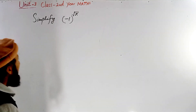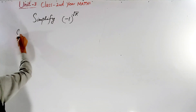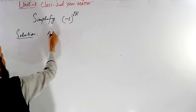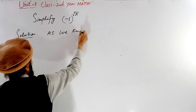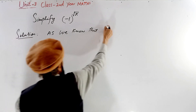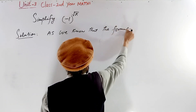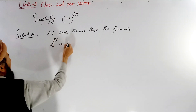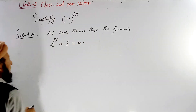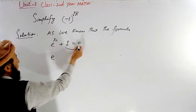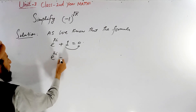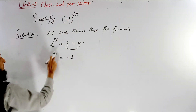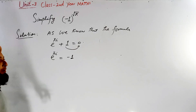According to the formula, we know that Euler's identity states: e to the power pi i plus 1 is equal to 0. So we can rewrite this as e to the power pi i is equal to minus 1. Now in the original question, in place of minus 1, we substitute this result: e to the power pi i.